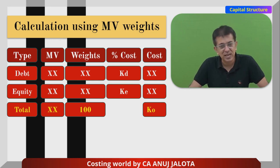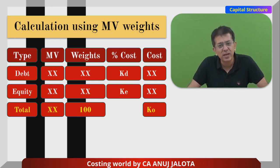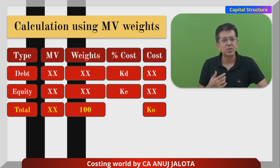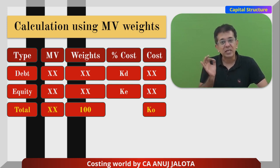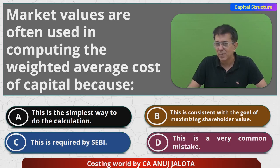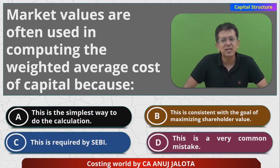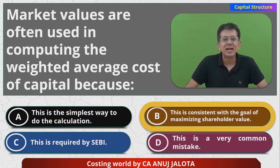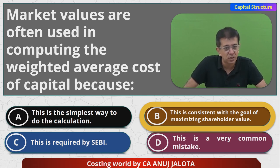This is the best way to calculate ko because we are using market value weights. As I said, using market value weights makes maximum sense — the aim of every company is wealth maximization, and the company should take all decisions that lead to an increase in market price per share. So the correct answer is option B. That is the correct answer. Thank you all so much, I'll see you next time with another question.